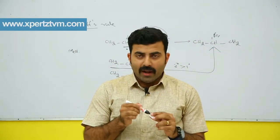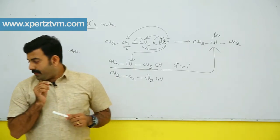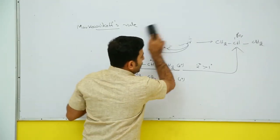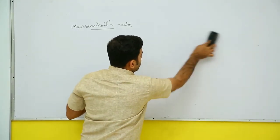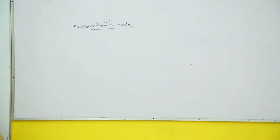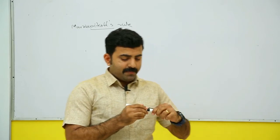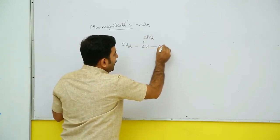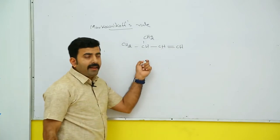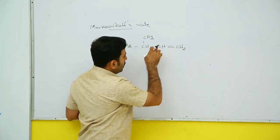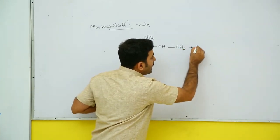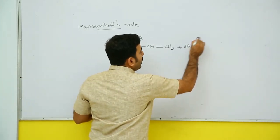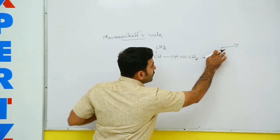This is Markovnikov's rule and its application. Now we are checking another question on Markovnikov's rule, because a simple study of the rule is not enough to solve all problems. Consider CH3-CH(CH3)-CH=CH2, another unsymmetrical alkene. If HBr is added, many students feel the major product simply follows Markovnikov's rule. Let's check what the actual major product is.